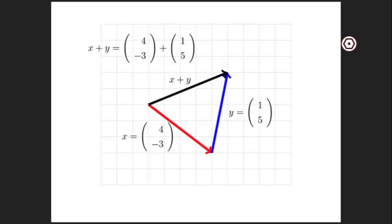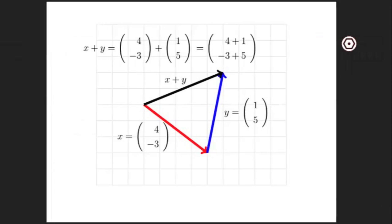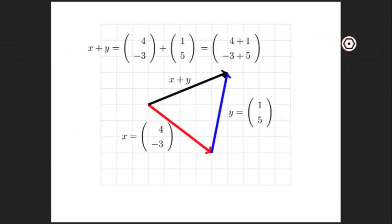In order to now compute the vector x plus y, all that you do is add the components together, 4 plus 1 minus 3 plus 5, to yield the vector 5, 2.